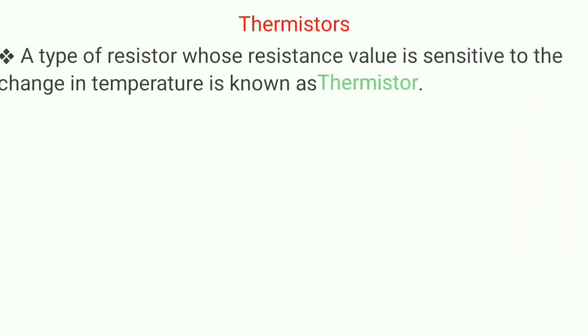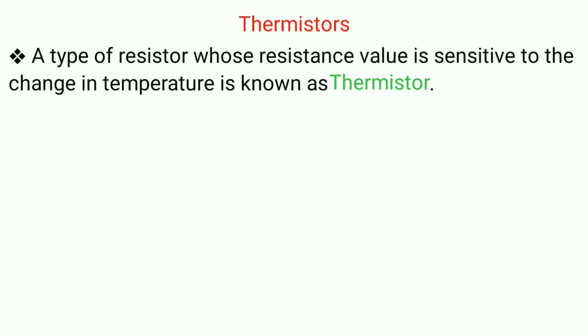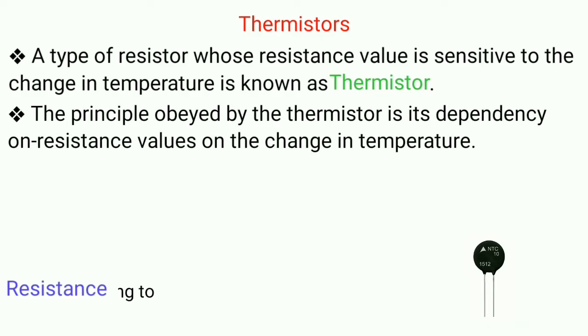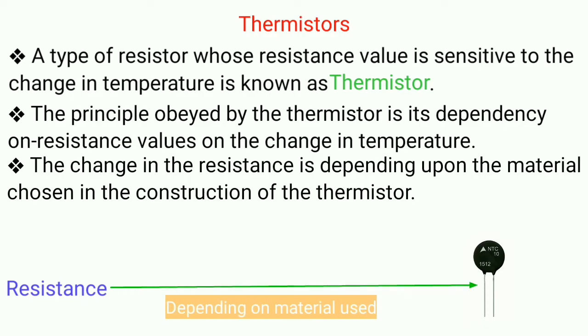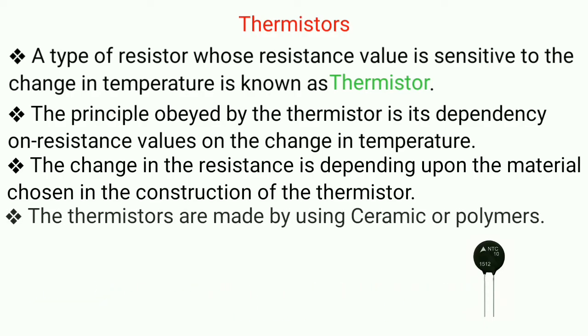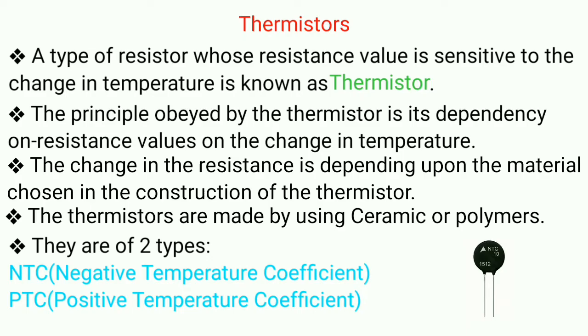Next type of contact sensor is thermistor. The word thermistor is derived from two words thermal and resistor. Thermistor shows change in resistance due to change in temperature and this resistance depends upon the type of material being used. Generally they are made from ceramic and polymers. Thermistors are of two types NTC and PTC. NTC is negative temperature coefficient that means resistance decreases with increase in temperature and PTC that is positive temperature coefficient that means resistance increases with increase in temperature.